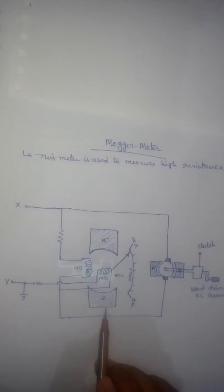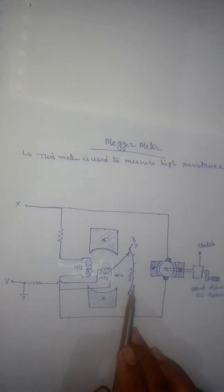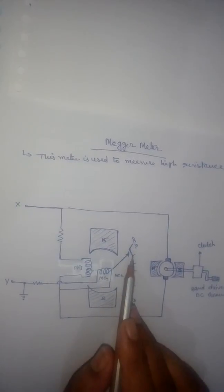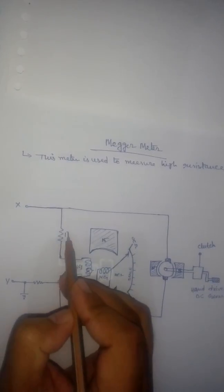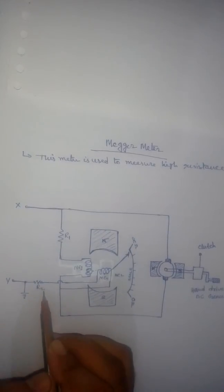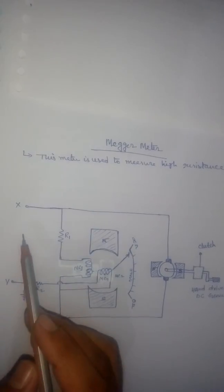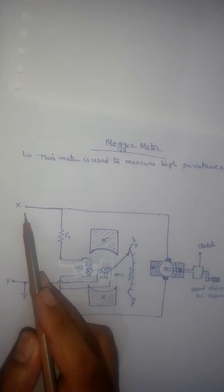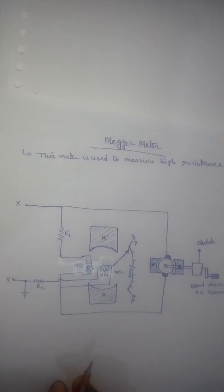These two are the permanent magnets, and the magnetic field is present here. This is the scale ranging from zero to infinity ohms — it can measure that range. R1 is a limiting resistor and R2 is also a limiting resistor. The test object will be connected here.